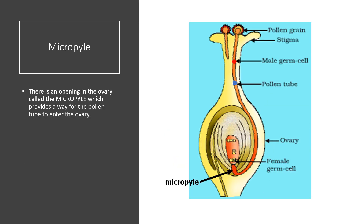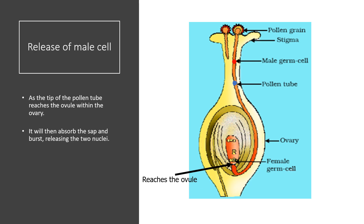As the pollen tube grows, it needs to reach the opening in the ovary, which we call the micropyle. This provides a way for the pollen tube to enter the ovary. Once the tip of the pollen tube reaches the ovary, it will absorb the sap and burst, releasing the two nuclei.